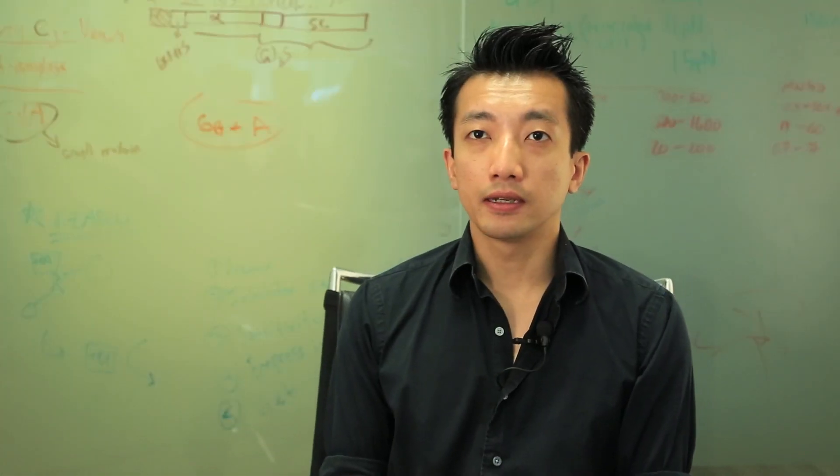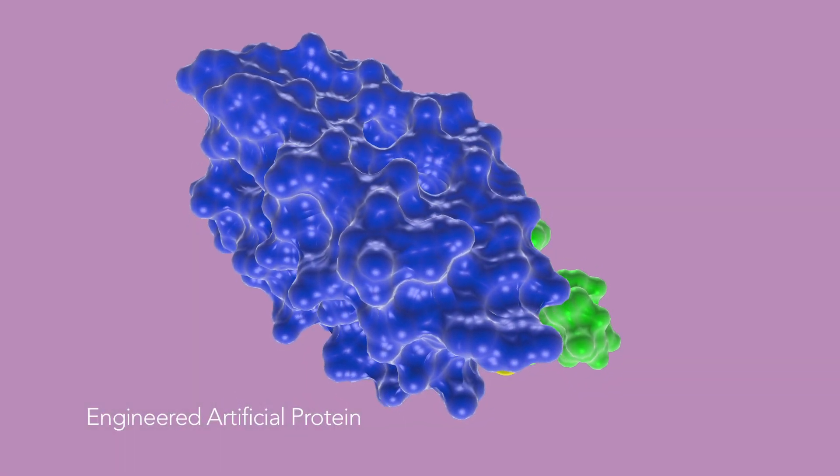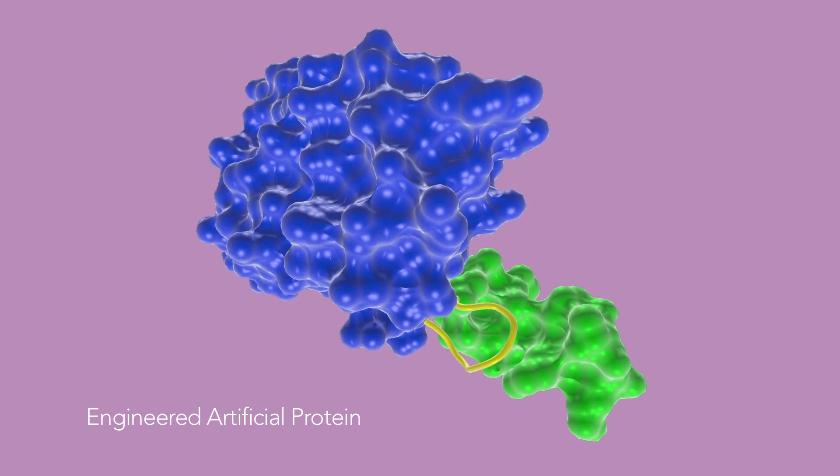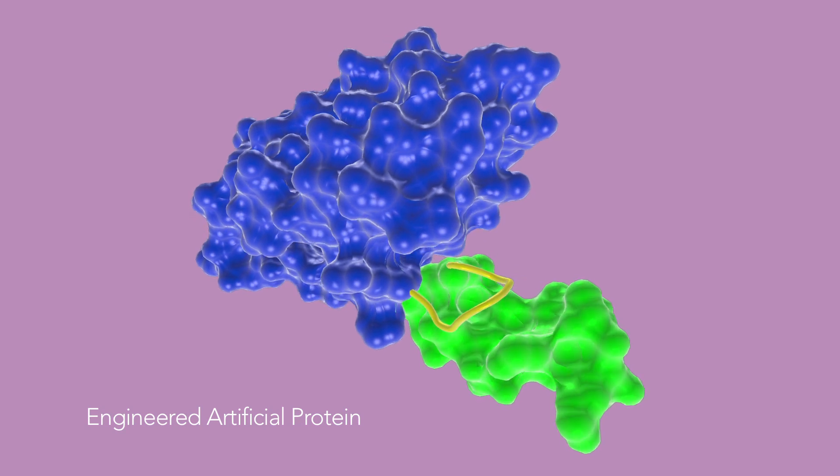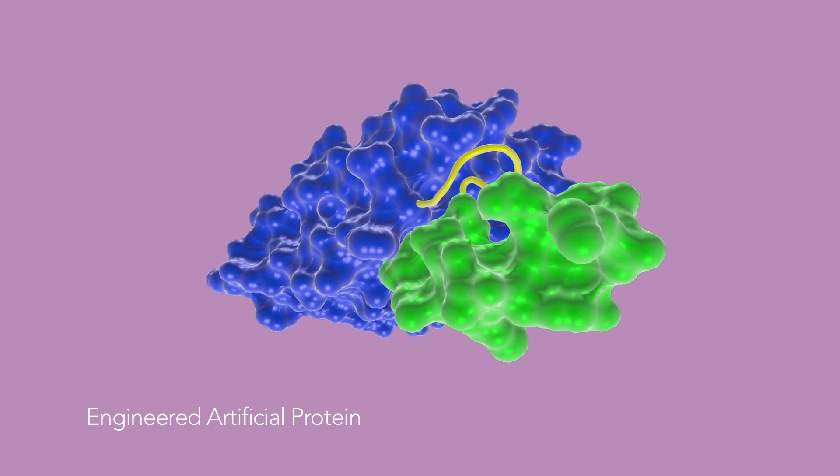The way it works is we genetically program the bacterium to produce artificial protein. This protein is a fusion protein composed of an amyloid domain fused to a functional peptide domain. And we can mix and match that peptide for whatever end function we want.